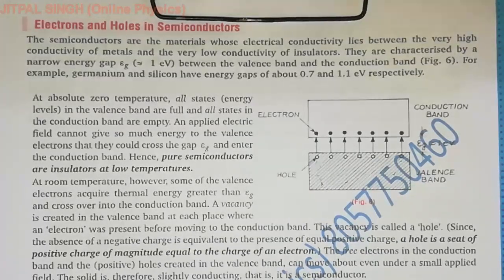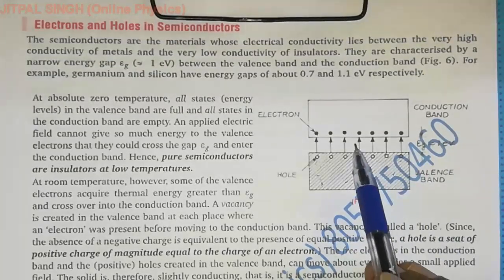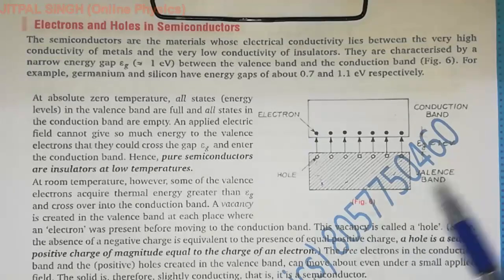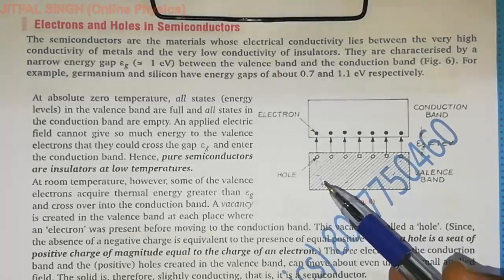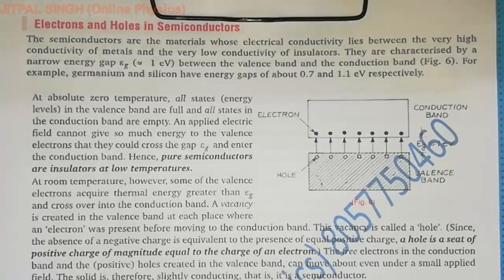So we have two types of currents: one is current due to electrons in the conduction band, which can move freely, and the other is current due to the motion of holes. The motion of holes is not as easy because electrons can move freely within the conduction band, but hole motion is due to the jumping of electrons from one covalent bond to another in the valence band. Therefore, electron mobility is greater than hole mobility.